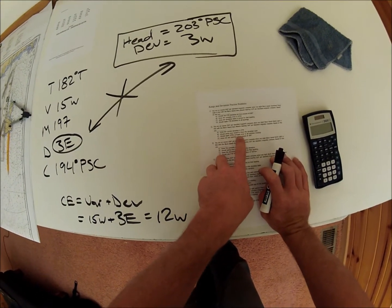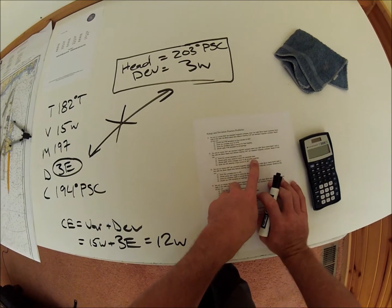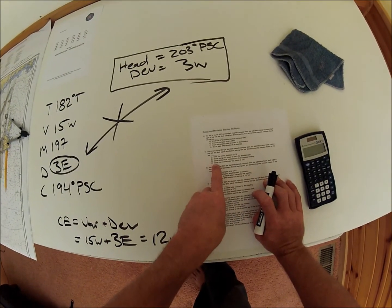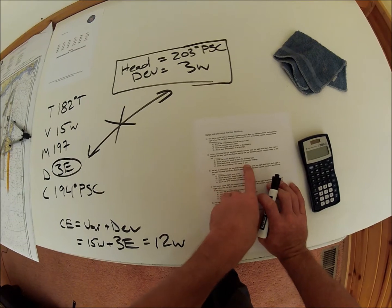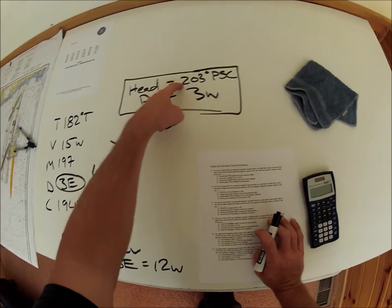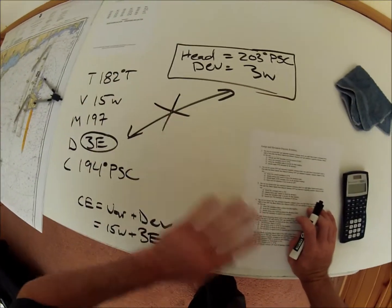Should apply 15 west compass error to all compass readings. No. No, you are steering a true course of 185. That's what happens if you put this heading in here and work it up. And that's not correct.